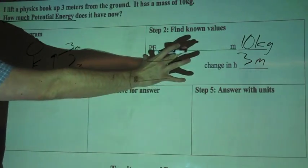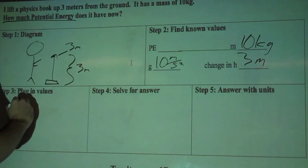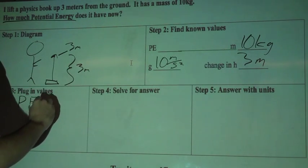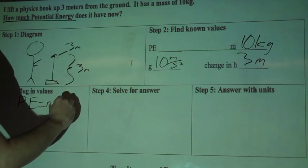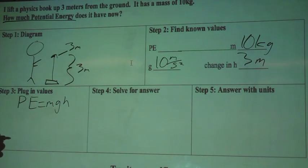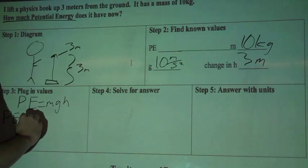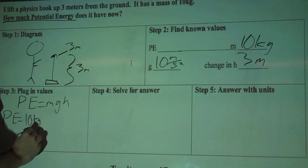Alright, so now that we have our known values, we're going to go ahead and plug it into our equation. We already have this equation, so it's PE equals MGH. Let's see, so I'll rewrite that. Potential energy, or PE, equals - my mass was 10 kilograms, so I'll write that in there, 10 kg.